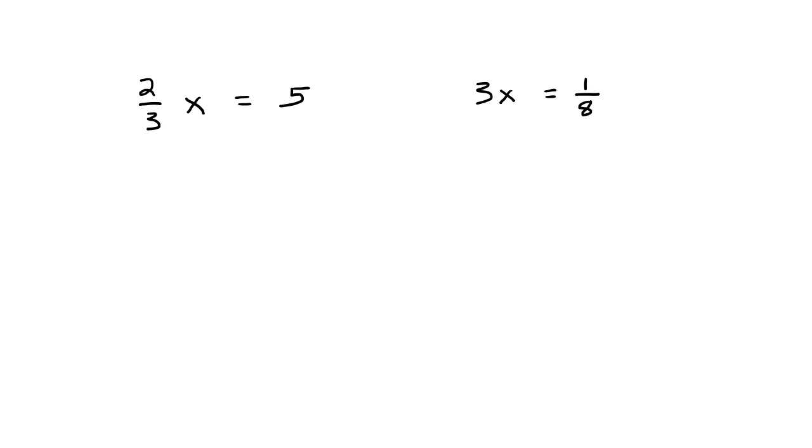There are a couple of cases that I want you to take a look at because they are done just a little differently. If I have 2 thirds times x, it would be kind of messy if I divided by 2 thirds. It would work, but I have a complex fraction, which is kind of a mess. Same over here. If I think I'm going to divide by 3, I get a complex fraction on the right.